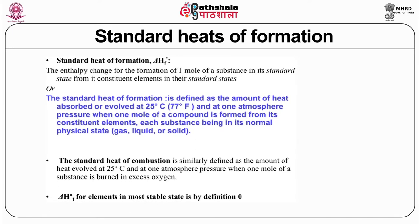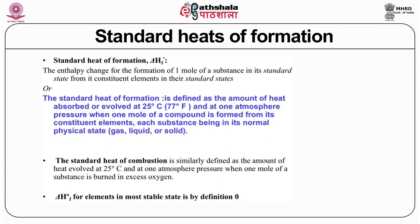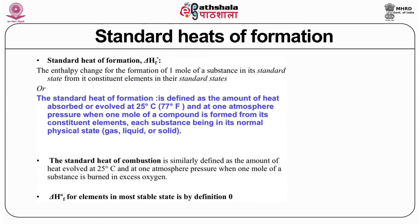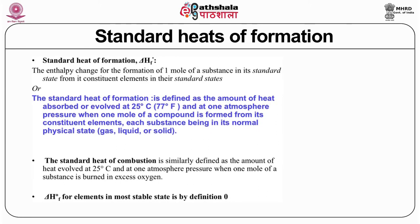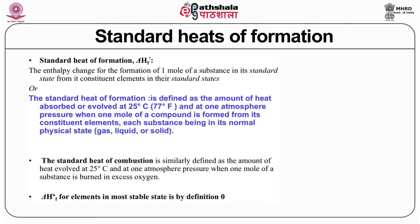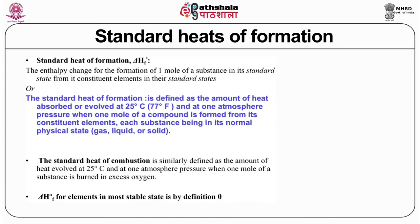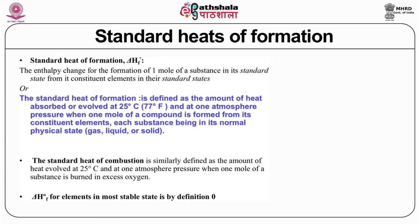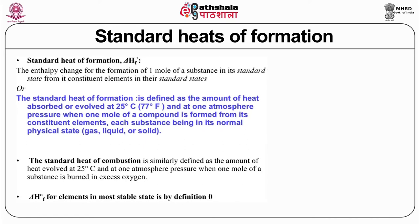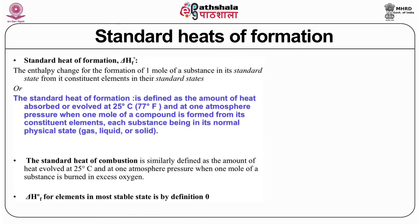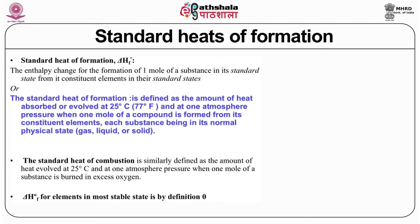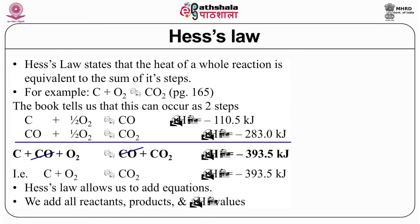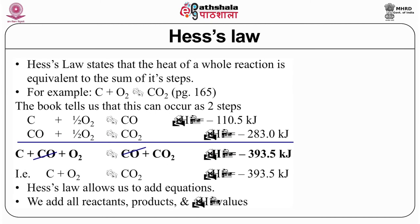Standard heat of combustion is similarly defined as the amount of heat evolved at 25 degrees centigrade and 1 atmospheric pressure when 1 mole of a substance is burned in excess of oxygen. Delta H for elements in their most stable state is defined by the symbol delta_f H.